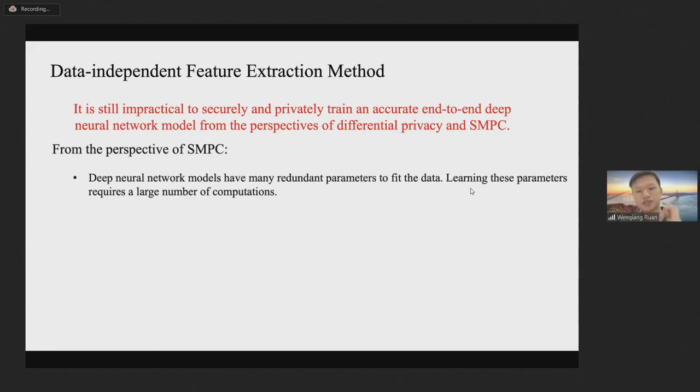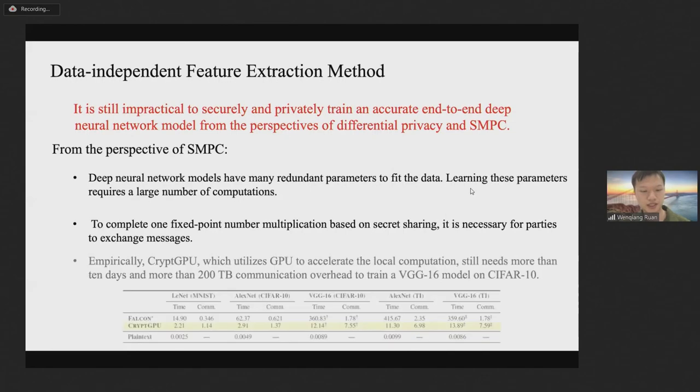From the perspective of SMPC, on the one hand, deep neural network models have many redundant parameters to fit the data. Updating these parameters requires a large number of computations. On the other hand, to complete one fixed point number multiplication based on secret sharing, it is necessary for parties to exchange messages. Therefore, securely training a deep neural network model would cause a very large communication overhead. For example, a recently proposed GPU-based MPL framework, CryptoGPU, still needs more than 10 days and more than 200 GB communication overhead to train a VGG-16 model.